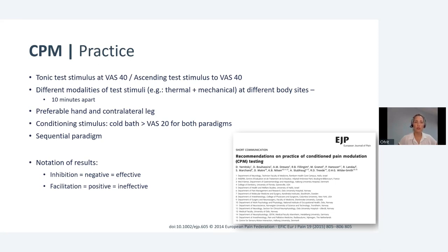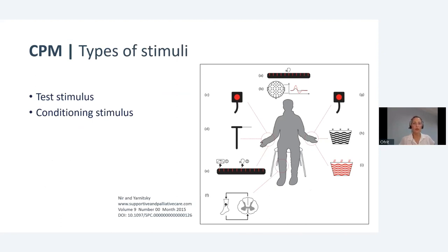With regard to notation of results, inhibition would be a negative notation — a minus — and the more negative it is, the more effective the CPM. Facilitation would be a positive notation, meaning CPM efficacy is low, non-existent, or ineffective. But irrespective of these recommendations, practice is different. This review by Niren Jernitsky found different labs doing different protocols.